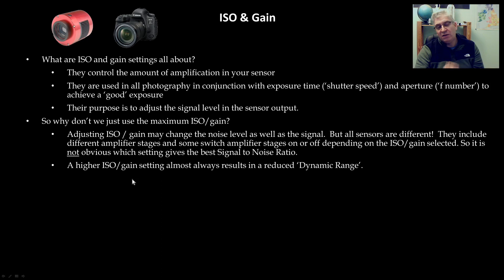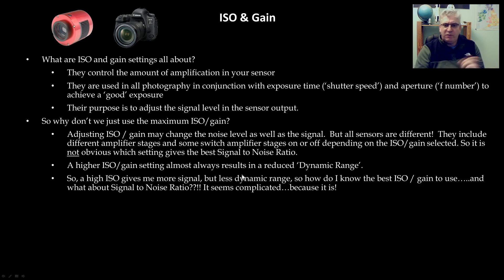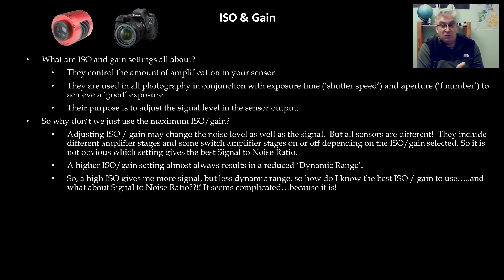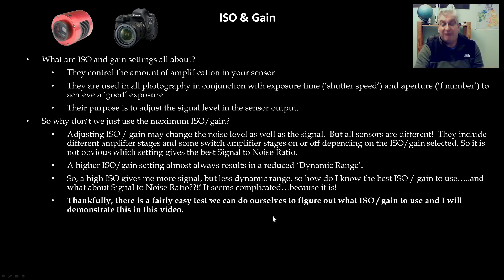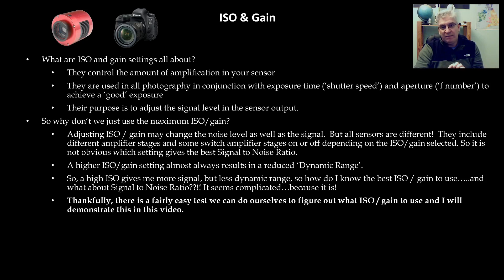A higher ISO or gain setting will almost always result in a reduced dynamic range. So we have a conundrum: high ISO gives more signal but less dynamic range. Thankfully there's a fairly easy test we can do ourselves to figure out the best ISO and gain setting for our particular camera. You can do this test yourself, and then when you go out to take pictures you'll know you're using the optimum ISO and gain.